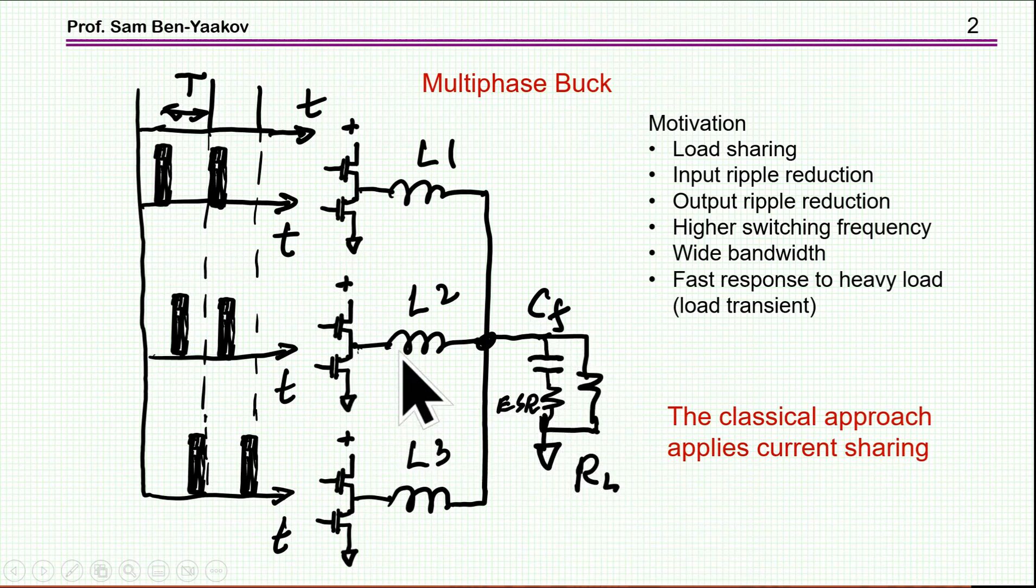The motivation of using a topology like this would be to get load sharing. The half-bridges share the load so each one has lower power. There is input and output ripple reduction due to interleaving. We can run higher switching frequency with smaller inductors, use wider bandwidth, and get fast response to heavy load changes because we can operate the three inductors in parallel and by that get a high dI/dt in case there is a change in the load.